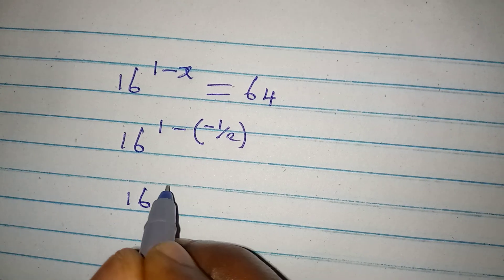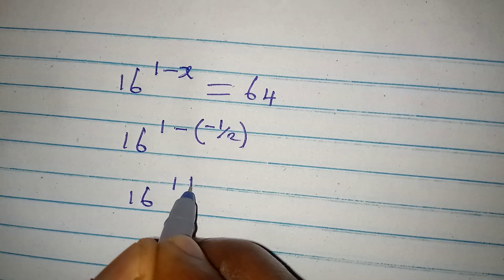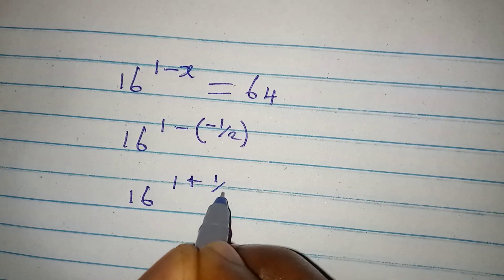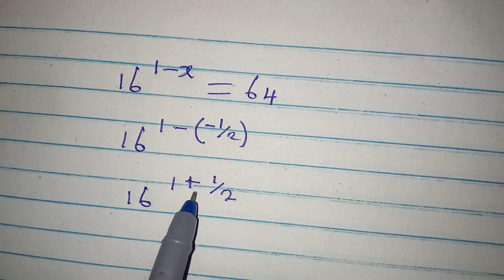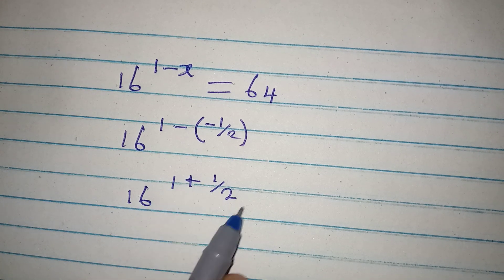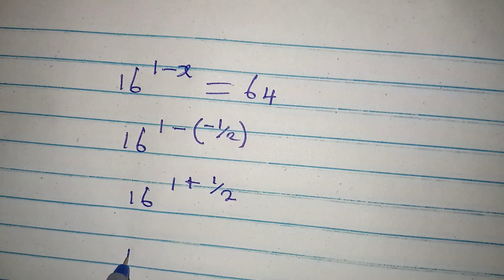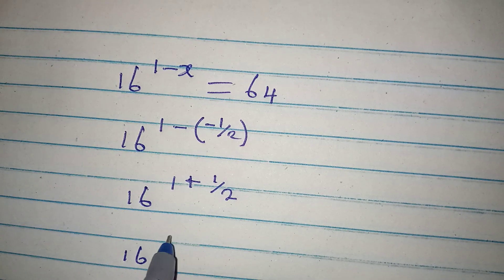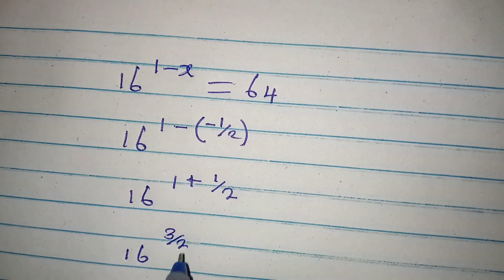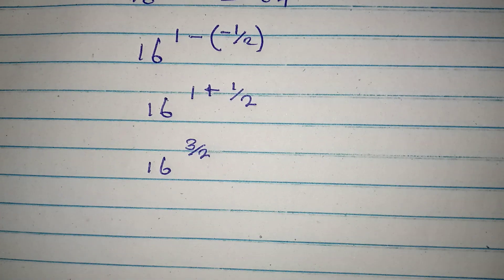This is 16 to the power of 1 plus 1 over 2. Negative, negative will give positive. Then to work on this, we are going to have 16 to the power of 3 over 2. This is what it means.